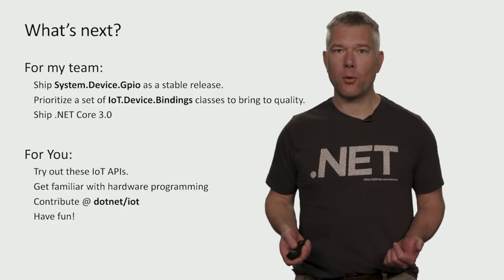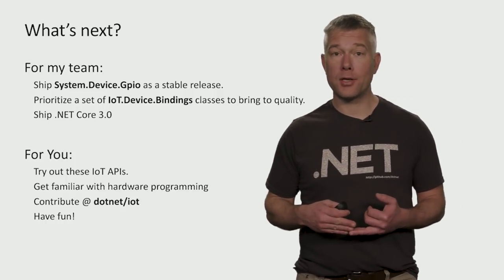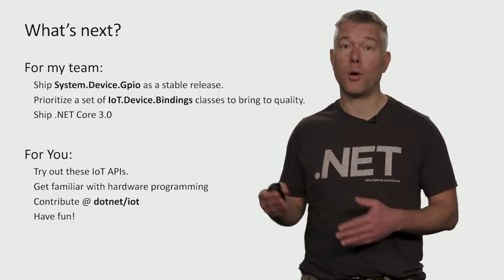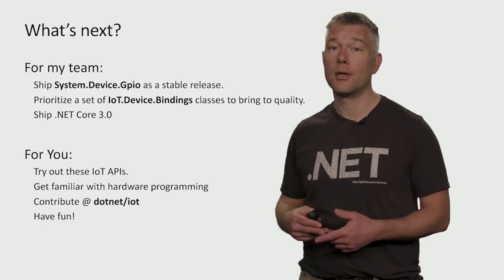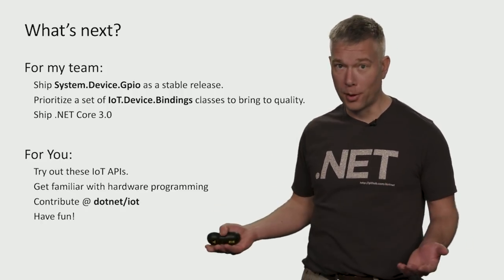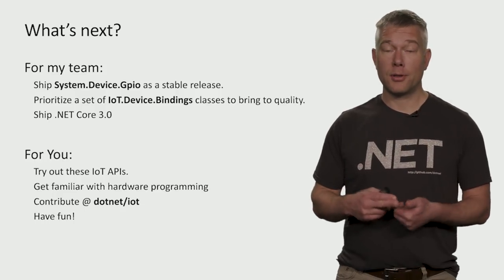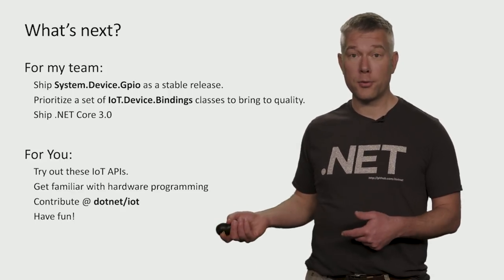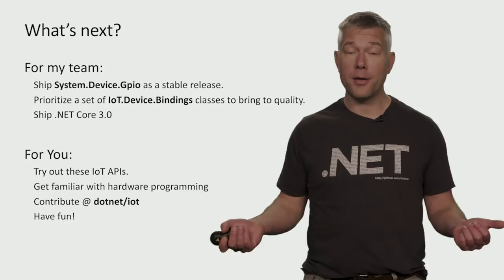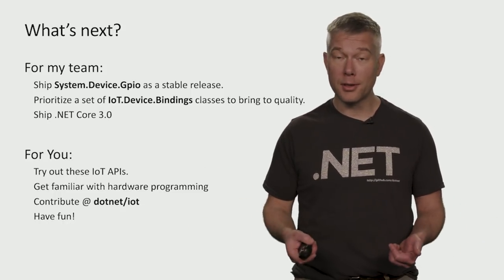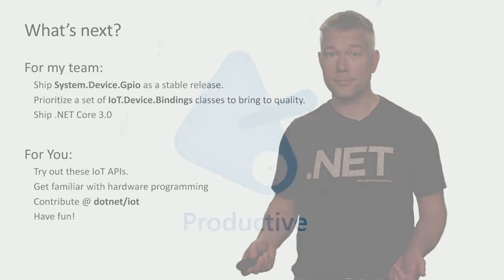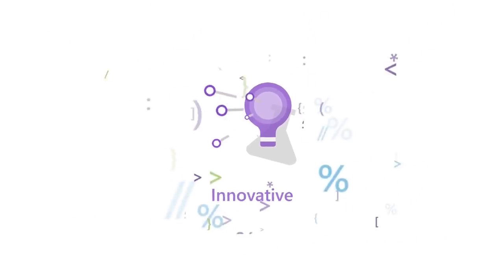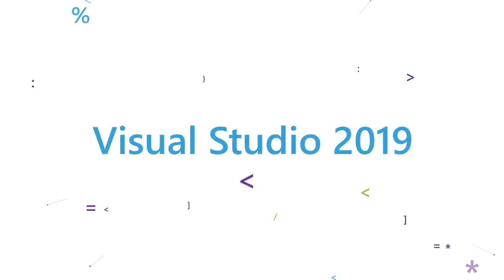You can also debug remotely from Visual Studio or Visual Studio Code. Looking at what's next: we need to bring the two NuGet packages — System.Device.GPIO and IoT.Device.Bindings — to quality and make stable releases, and we also need to ship .NET Core 3.0. For you, get familiar with these APIs, try them out, learn about hardware programming, and contribute to .NET/IoT — and have fun. There's a lot to learn here and we've certainly enjoyed building this new functionality. We hope you really like it and we'll see you next time.